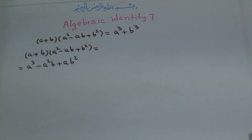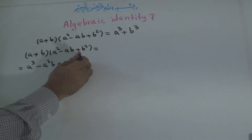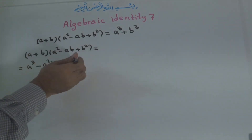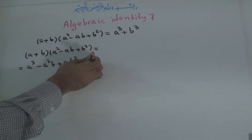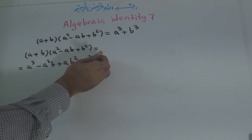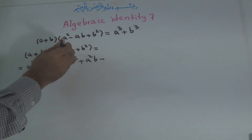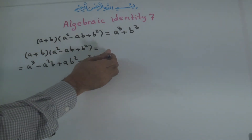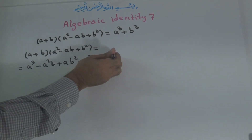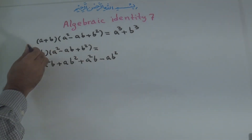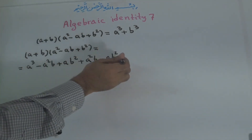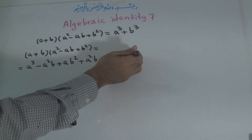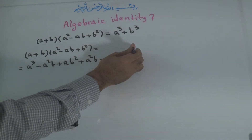Now for the second term: positive times positive is positive, B times A to the power of 2 is A to the power of 2 B. Positive times negative is negative: B times AB is AB to the power of 2. And finally, positive times positive is positive: B times B to the power of 2 — adding all the powers, 1 plus 2 equals 3 — gives B to the power of 3.